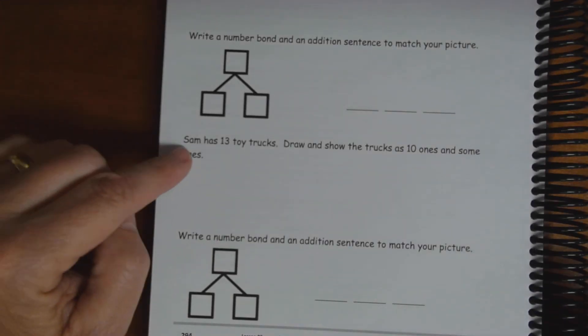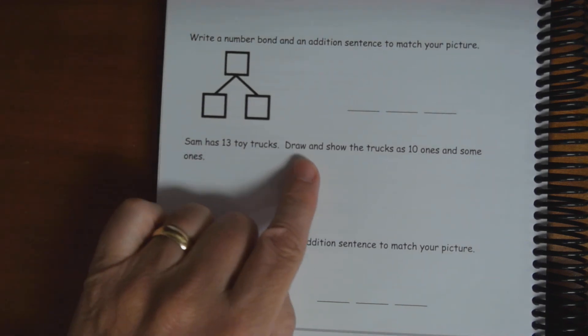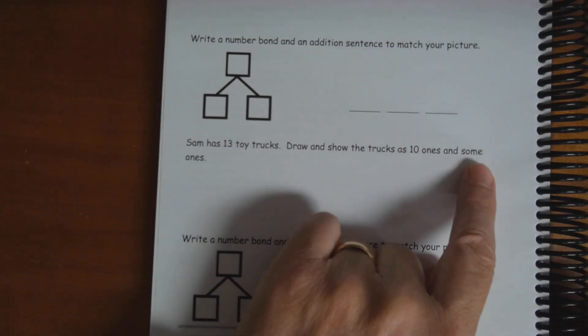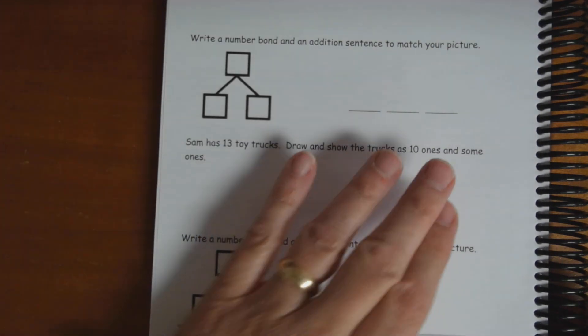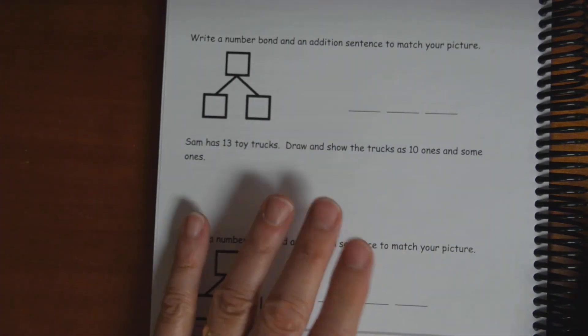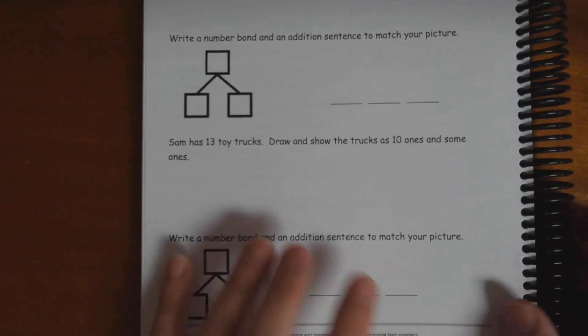All right. After apples, you got trucks. Sam has 13 toy trucks. Draw and show the trucks as 10 ones and some ones. So, you're going to draw trucks here as 10 and then some more. And you're going to do the problem, I mean the number bond and the number sentence.